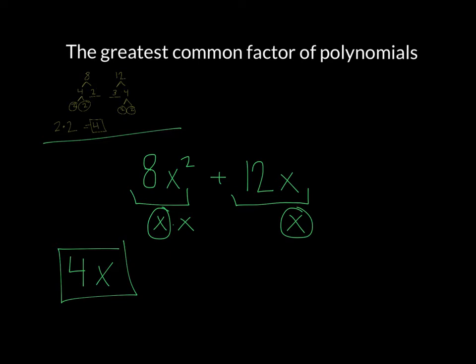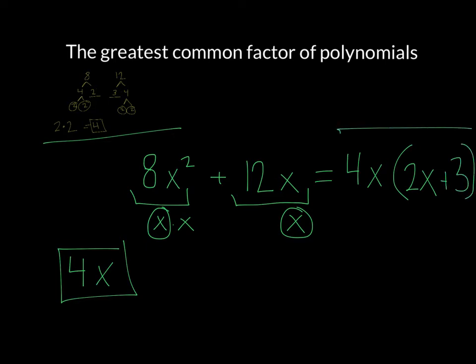After you get the greatest common factor of the polynomial, you actually want to factor the polynomial out. When you're factoring, it's a lot like reducing fractions — I'm going to divide 4x into each term. So 8x squared divided by 4x: 8 divided by 4 is 2, x squared divided by x is x. Then 12 divided by 4 is 3, and x divided by x is 1, so that goes away. So 4x times (2x + 3) would be the factored form of the polynomial.